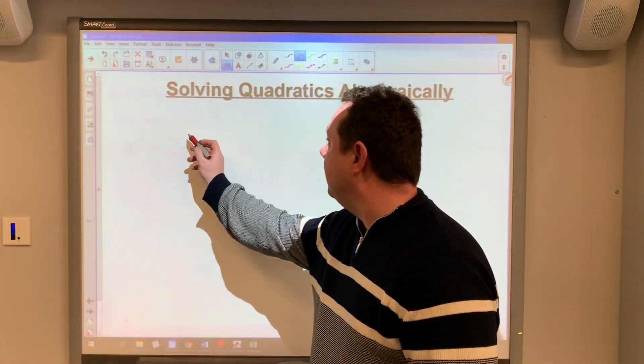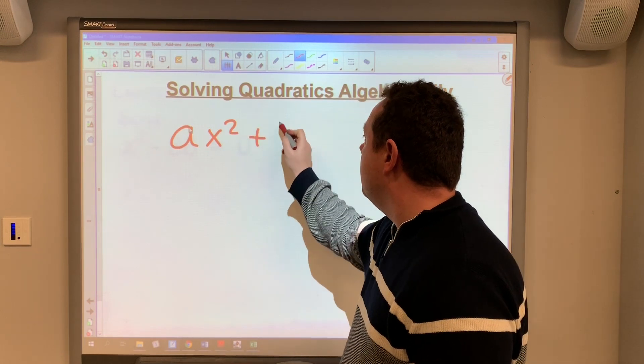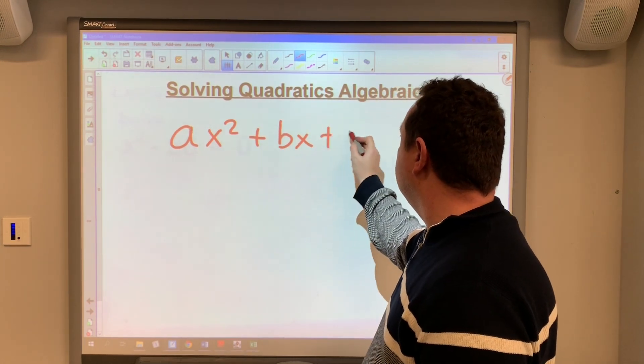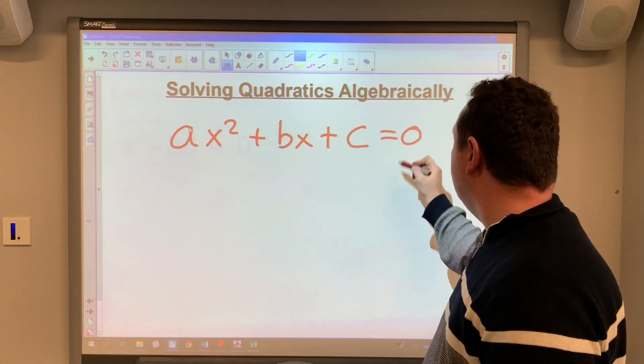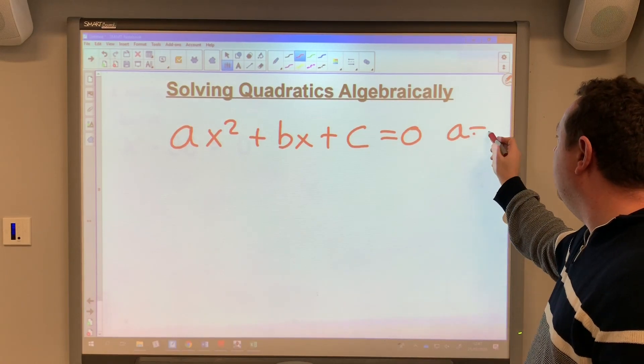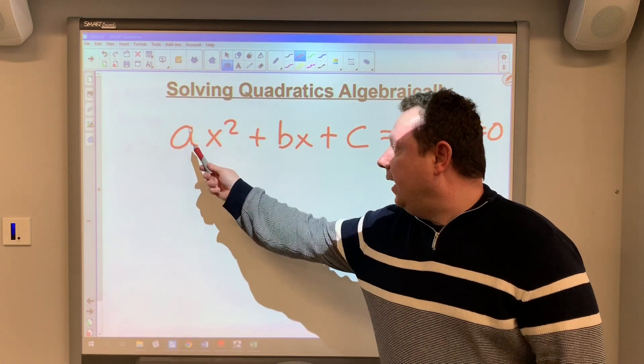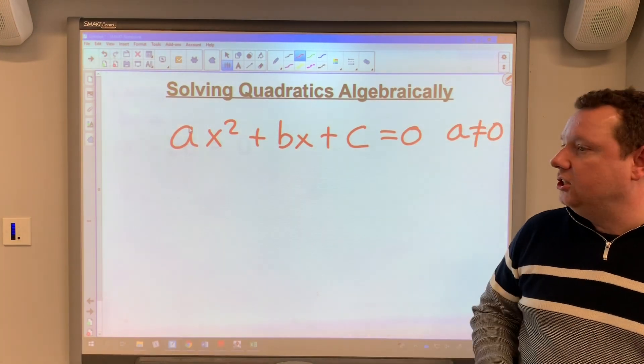A quadratic is an equation of the form ax² + bx + c = 0, and remember a cannot equal to zero. So a is just a number, b is just a number, c is just a number.